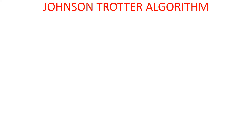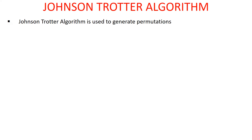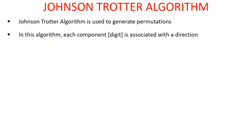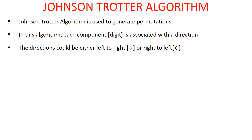Today let us discuss the Johnson-Trotter algorithm. This algorithm is used to find all the permutations for a given set. In this algorithm, a digit or component is associated with a direction, and the direction could be either from left to right or from right to left.